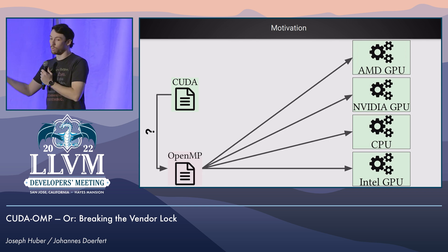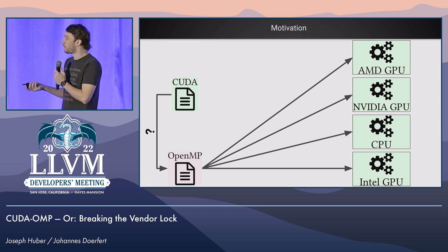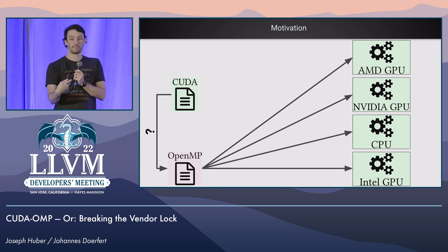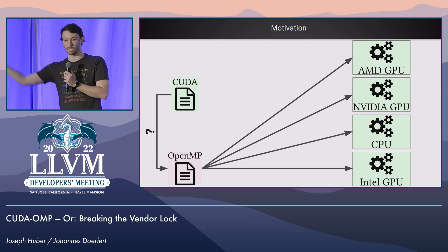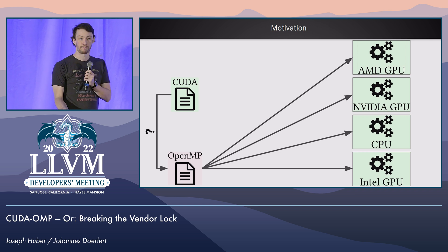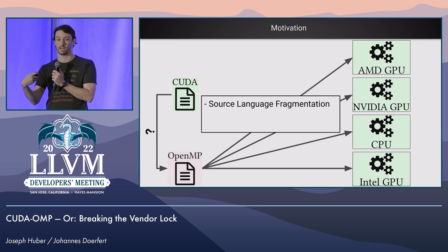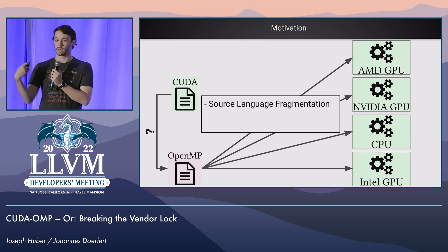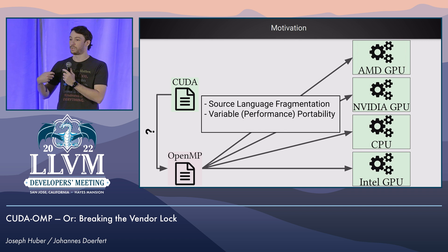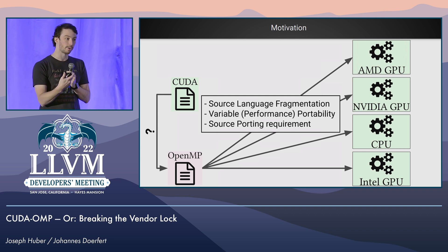Some people work on OpenMP — and if you know me, I work on OpenMP, so OpenMP is kind of a thing for me — but we don't even have a way to go there from CUDA code; there is no tool that translates. What I've tried to show here is we have this source language fragmentation where every vendor presents their own solution. You don't really know if those solutions are going to be performance-portable or just portable, and you don't want to port your code in the first place.